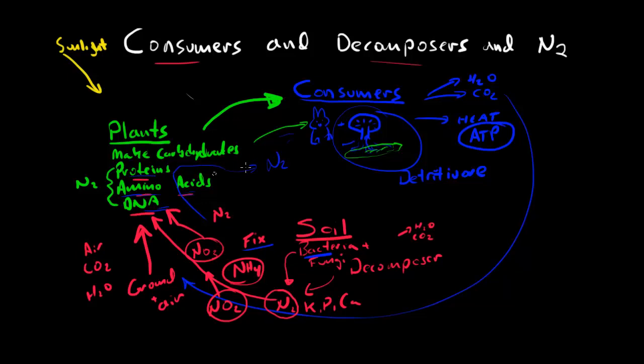They get that nitrogen in proteins, amino acids, and DNA. Then that animal dies. When that animal dies, the bacteria and fungi decompose it and release that nitrogen back into these forms, back up to the plant again. Then the cycle continues.